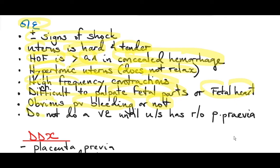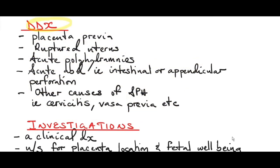Remember not to do a vaginal examination until ultrasound has ruled out placenta previa. Differential diagnoses of abrupta placenta include placenta previa, ruptured uterus, acute polyhydramnios — which can present with an acute abdomen similar to intestinal or appendicular perforation — and other causes of antepartum hemorrhage such as cervicitis, vasa previa, and others.